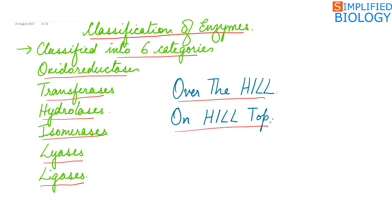Let's start with 'Over The Hill'. O of Over is for Oxidoreductases. T of The is for Transferases. H of Hill is for Hydrolases. I of Hill is for Isomerases. L of Hill is for Lyases, and the second L is for Ligases.